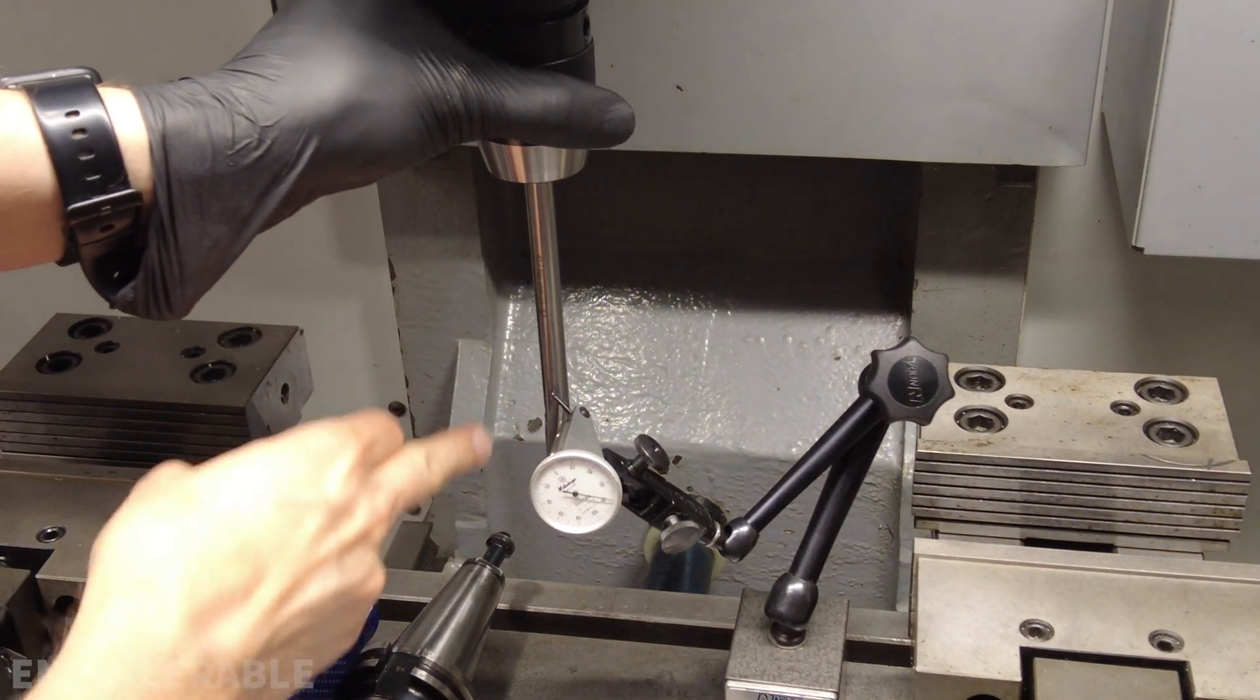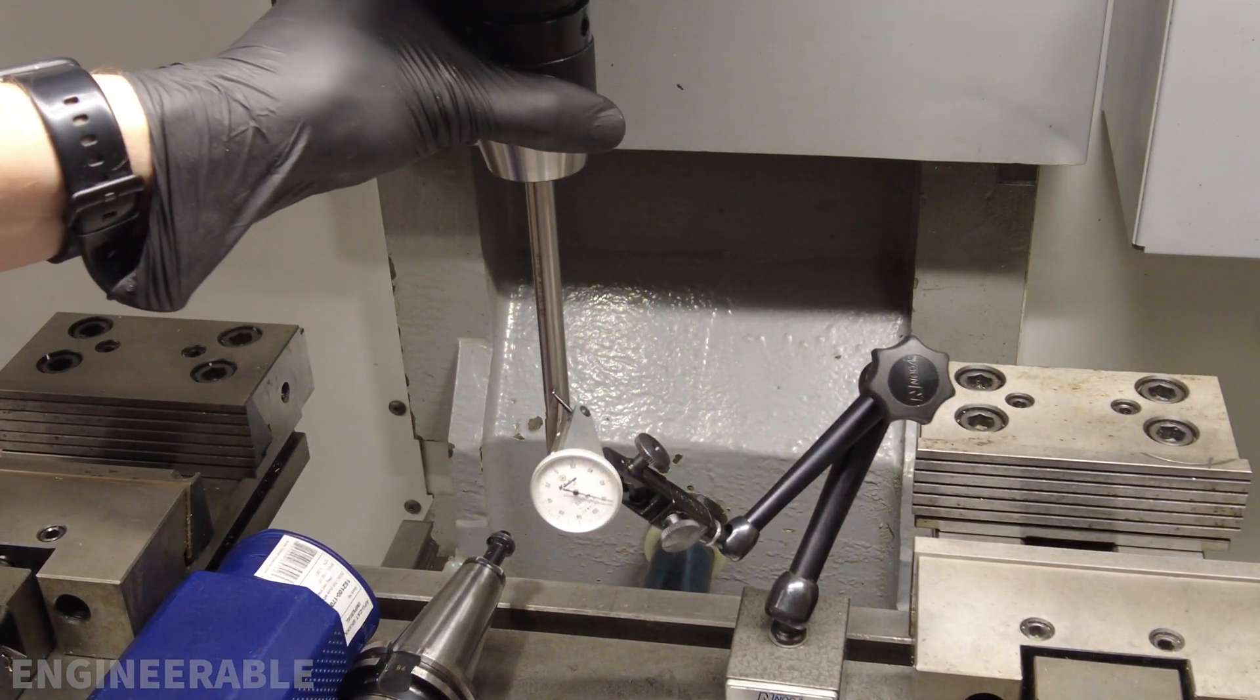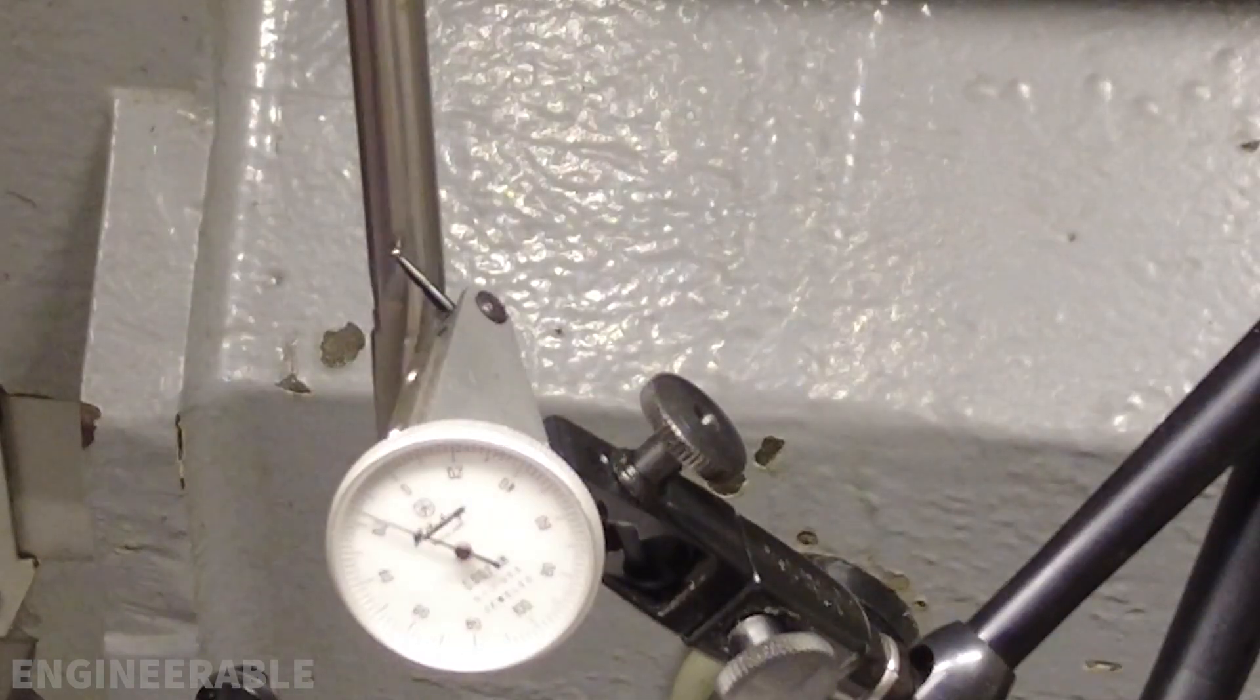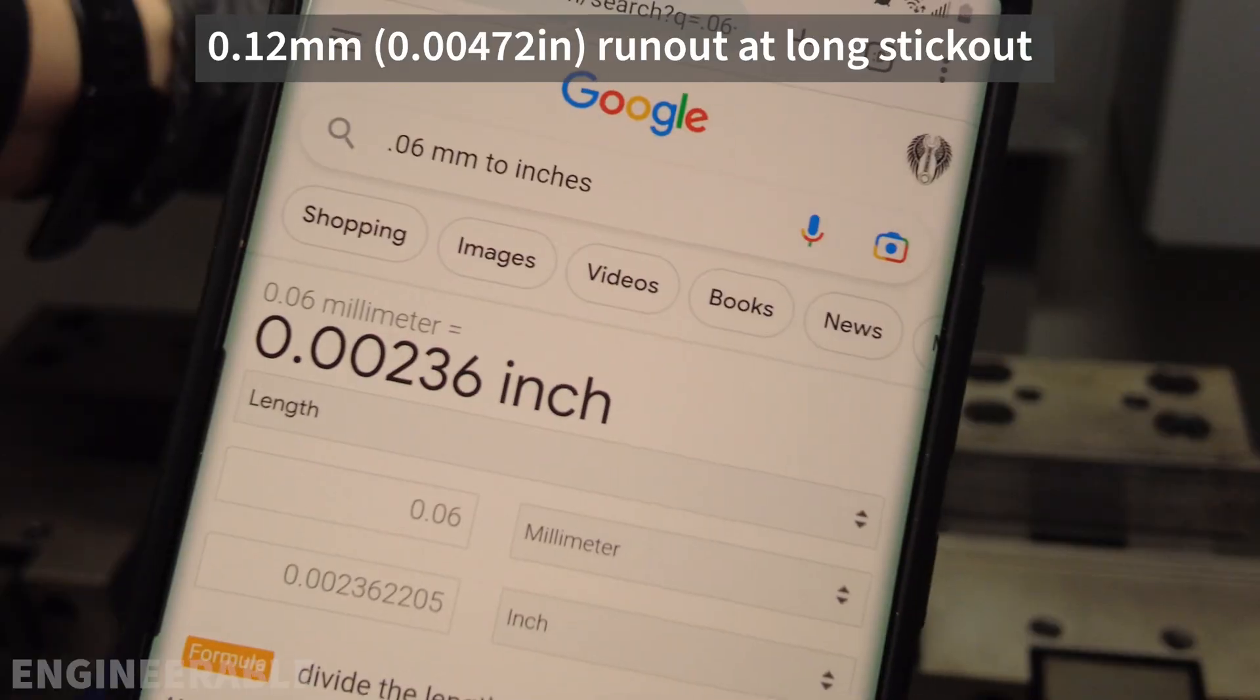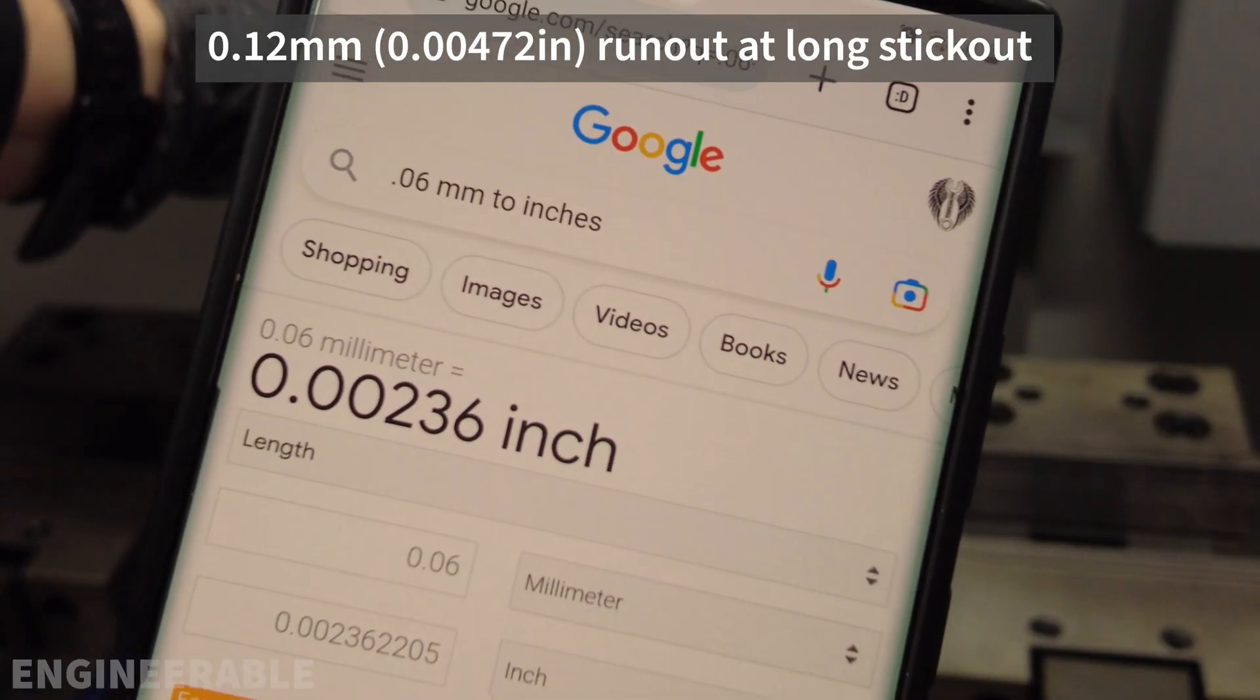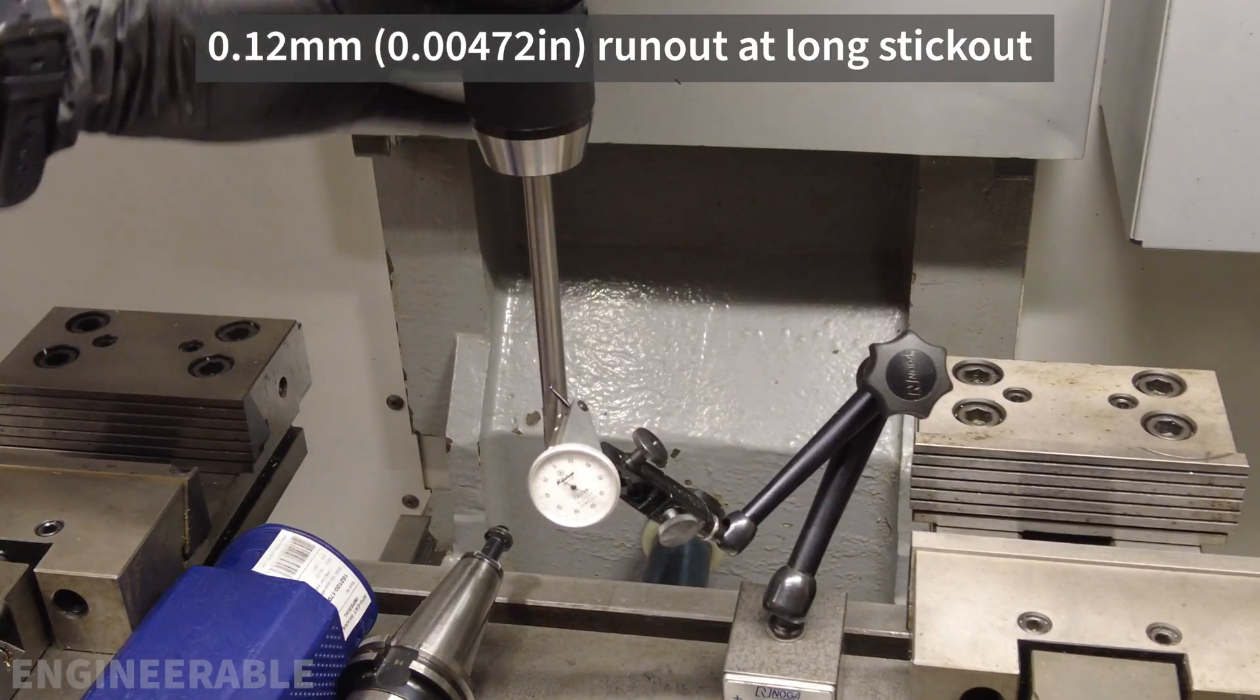Even with a very long tool, in this case a reamer, which I'm not sure how straight that actually is, I'm only measuring a total run-out of about 0.12 millimeters, which is still quite small. Plus or minus 0.06 millimeters or plus or minus 2.36 thousandths of an inch. That's pretty good for such a long stick out.